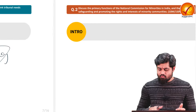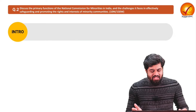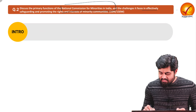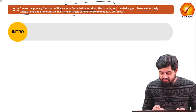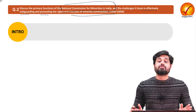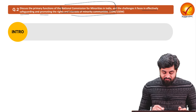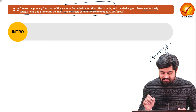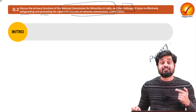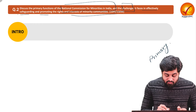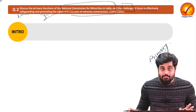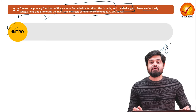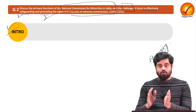Now we move to the next question: discuss the primary functions of the national commission for minorities in India and the challenges it faces in effectively safeguarding and promoting the rights and interests of minority communities. There are clearly two parts — number one, discuss the primary functions, and number two, discuss the challenges it faces in effectively discharging those functions related to safeguarding and promoting minority rights.